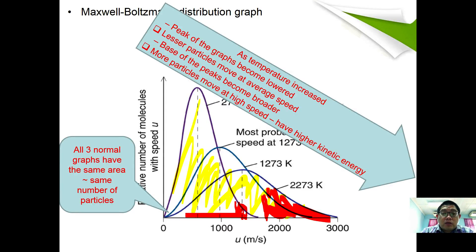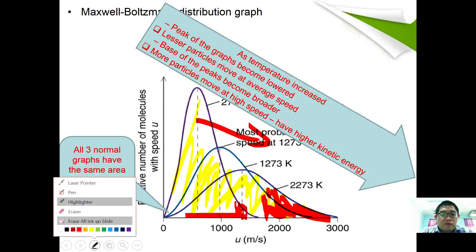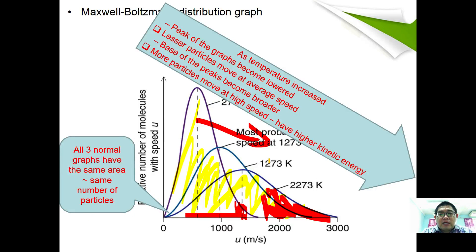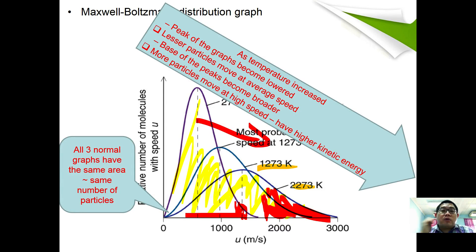The peaks also shift to the right as temperature increases. This indicates that the average molecule has a higher speed — even those traveling at average speeds move faster at higher temperatures. This is what can be explained based on the Maxwell-Boltzmann distribution graph in terms of temperature.